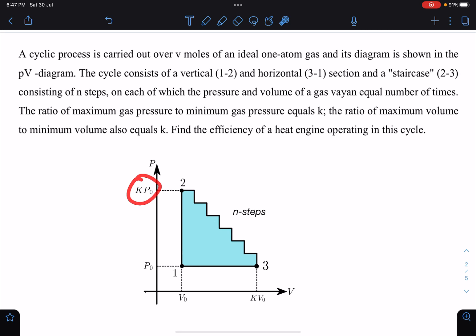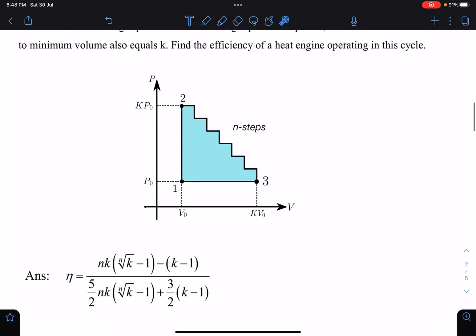Similarly, for volume also this ratio is the same, k. We have to find out the efficiency of a heat engine operating in this cycle. Here is the answer given for this problem, so give it a try.